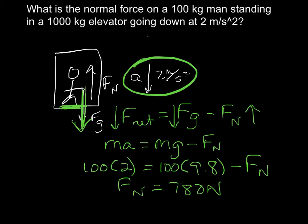If this guy was standing on a bathroom scale, he would find he weighed less. You feel this going down in an elevator — everything feels a little lighter because it didn't go down with the elevator at first, so the normal force was a little less. If he was going down in free fall — say the elevator totally broke — he'd be accelerating at the same rate as gravity, there would be no normal force, and he'd be basically weightless. That's kind of what the Vomit Comet does.